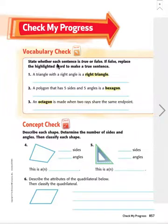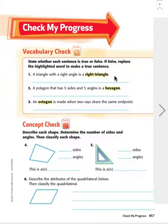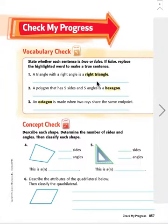It says state whether each sentence is true or false. If false, replace the highlighted word to make a true sentence. So if it is false, we're going to correct it to make it true. And if it is true to begin with, we'll just go ahead and leave it as it is. Number one: a triangle with a right angle is a right triangle. That is true because if it has a right angle and it's a triangle, we call it a right triangle.